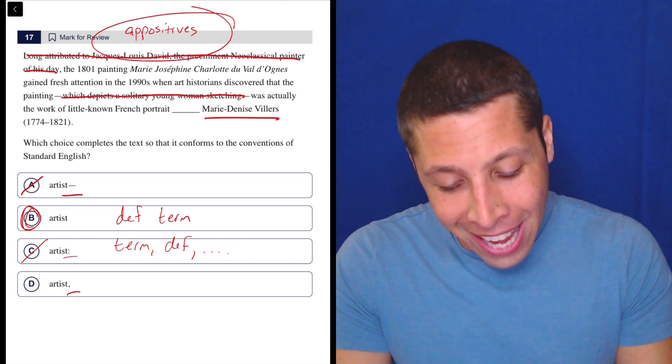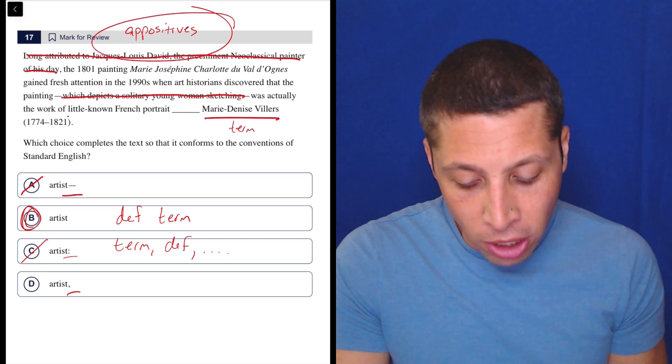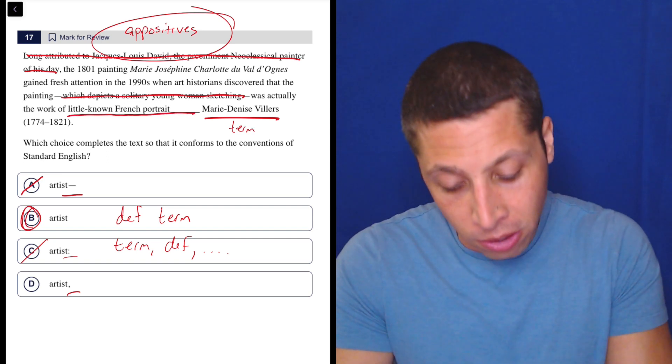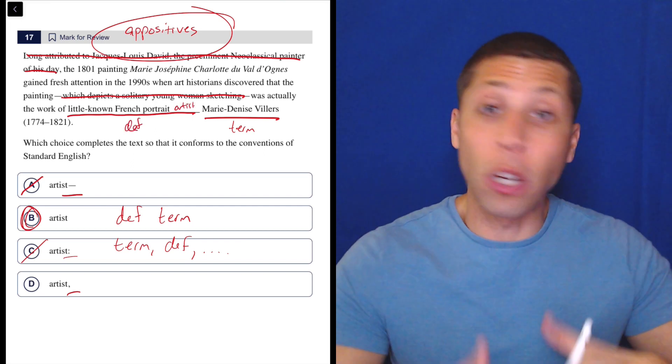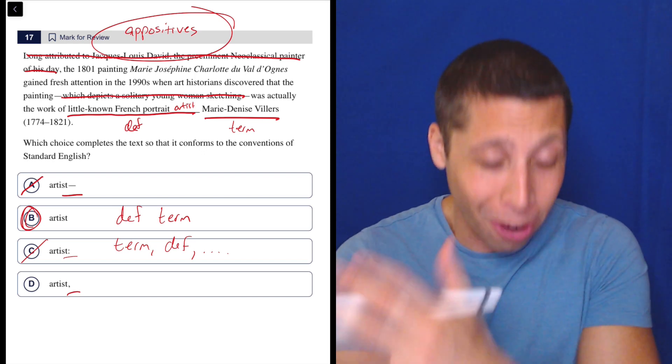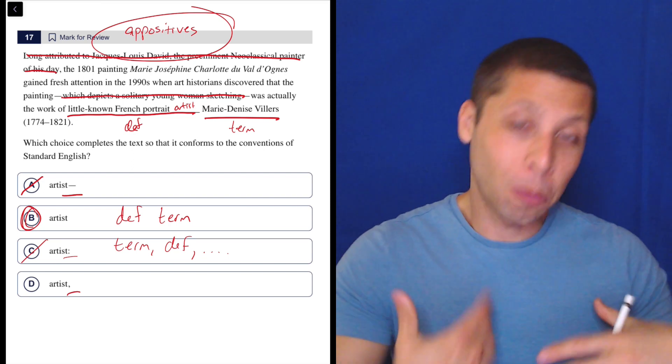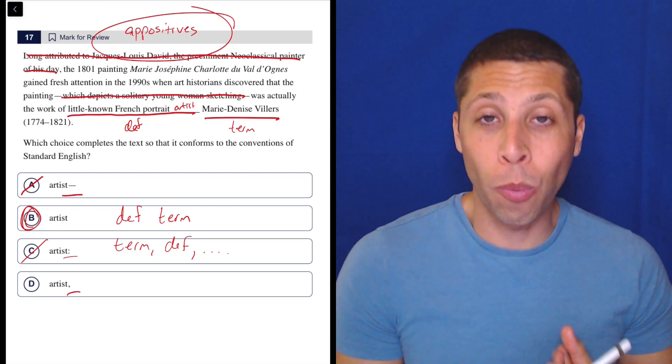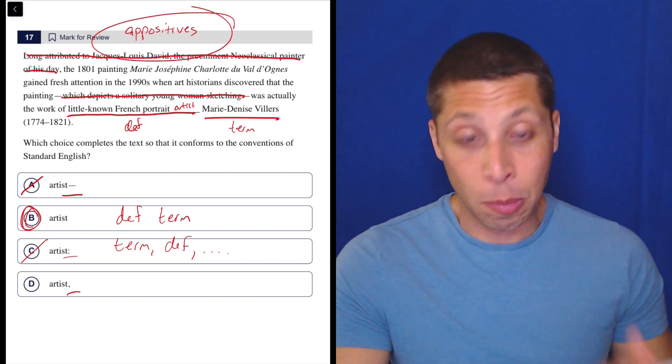We'd look up the term, and then our definition is what we would learn about this person. Well, what is she? She is a little-known French portrait artist. So that's our definition. Notice that it's a little longer, notice that it could apply to other people. There are probably other little-known French portrait artists, so it's not as specific. So the more specific thing, that is what we would call the term. That's the thing you would look up, so it's almost always going to be a name, a specific name.